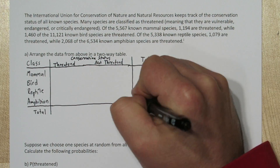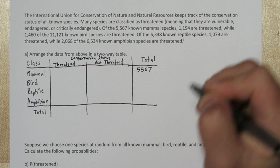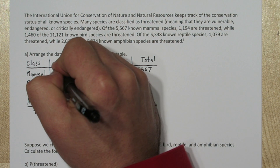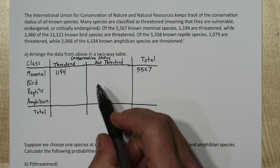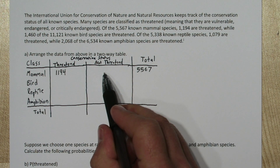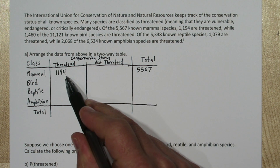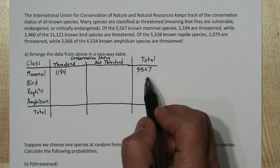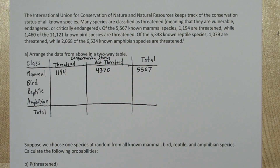We're told there are 5,567 mammals, so we'll write that as the total number of mammals. Of those mammals, 1,194 are threatened, so we'll put that in the cell for threatened and mammal. That means the not-threatened cell for mammals is the difference: 5,567 minus 1,194, which equals 4,370.